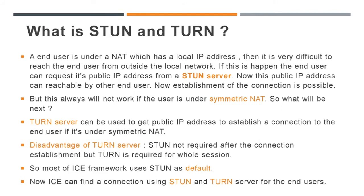Next, we need to understand what STUN and TURN are. If an end user is under a NAT with a local IP address, it is very difficult to reach that end user from outside the local network. In this case, the end user can request its public IP address from a STUN server. Now this public IP address can be reached by other end users, making establishment of the connection possible. So the STUN server helps a client get its public IP address if it is under NAT. But this does not always work if the user is under a symmetric NAT. In that case, we use a TURN server. TURN server can be used to get a public IP address to establish a connection when the end user is under a symmetric NAT. In short: STUN is commonly used when a user is under NAT, while TURN is used when the user is under symmetric NAT.